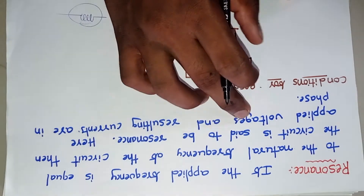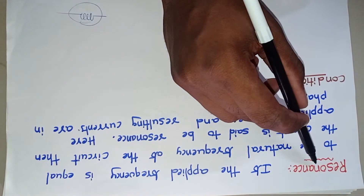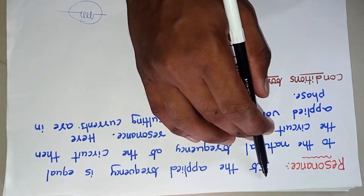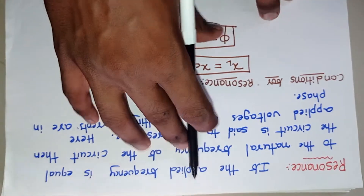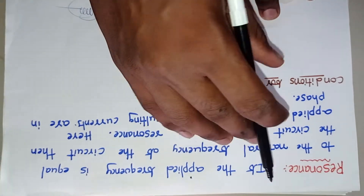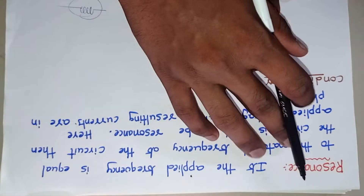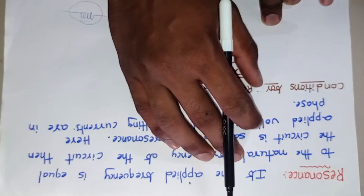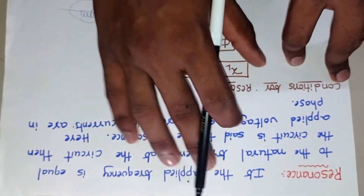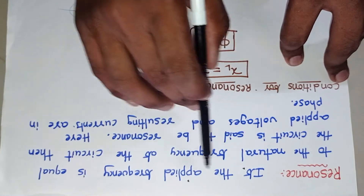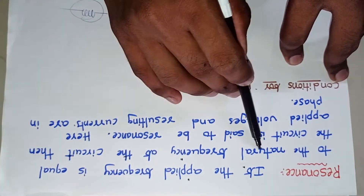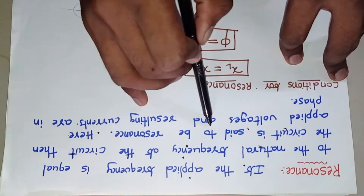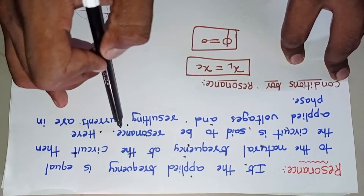Hi friends, in this video we will discuss about resonance. Most students have trouble with this topic. I will explain an easy way of finding resonance, resonance circuits, and what resonance is. First, let's see what resonance is: if the applied frequency is equal to the natural frequency of the circuit, then the circuit is said to be in resonance.